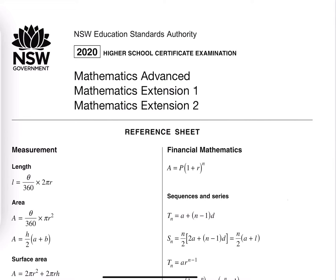Firstly, I'm going to color them in differently for Advanced, Extension 1, and Extension 2. So Advanced I'm going to color in red, Extension 1 in yellow, and the last one, Extension 2, in blue. This makes it easy for students to know which course each formula belongs to.